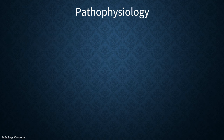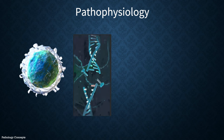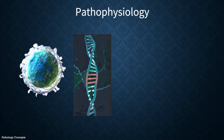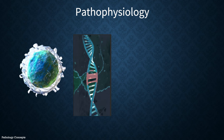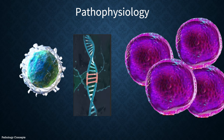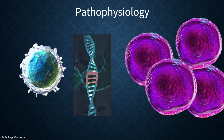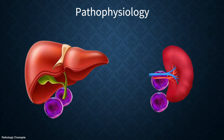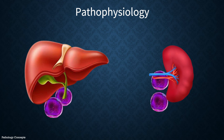Pathophysiology: ALL is thought to occur after damage to DNA, which causes lymphoid cells to undergo uncontrolled growth and spread throughout the body. Splenomegaly and hepatomegaly occur due to sequestration of platelets and abnormal lymphocytes in the spleen and liver.